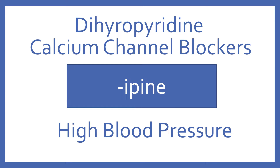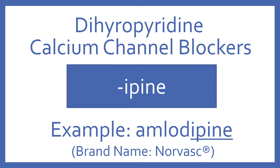Dihydropyridine calcium channel blockers end in the suffix -ipine. They are for high blood pressure. An example of a dihydropyridine calcium channel blocker is amlodipine, and its brand name is Norvasc.